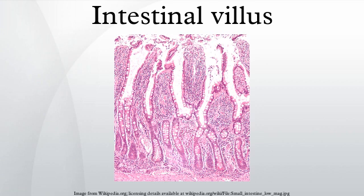Villi are specialized for absorption in the small intestine as they have a thin wall, about one cell thick, which enables a shorter diffusion path. They have a large surface area so there will be more efficient absorption of fatty acids and glycerol into the bloodstream. They have a rich blood supply to keep a concentration gradient. Villi also help the intestines to move food along the digestive pathways.